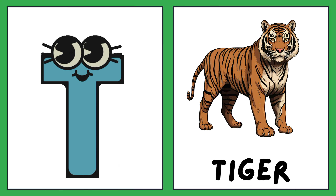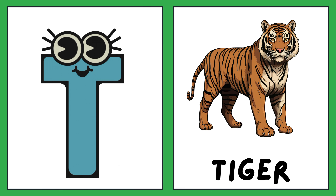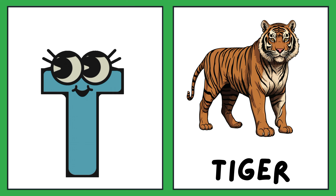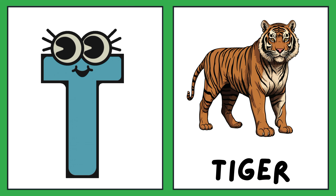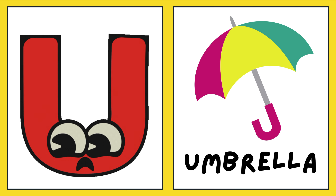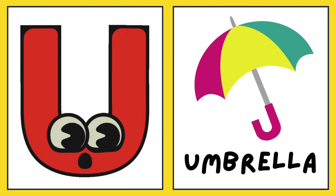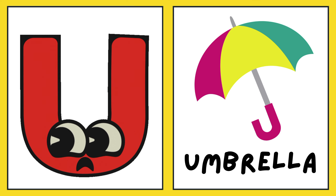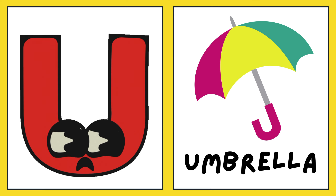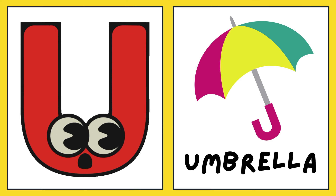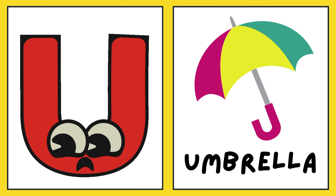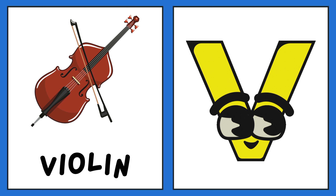U is for tiger. Tiger. Tiger. T, tiger. U is for umbrella. A, umbrella. U, umbrella. U, umbrella.